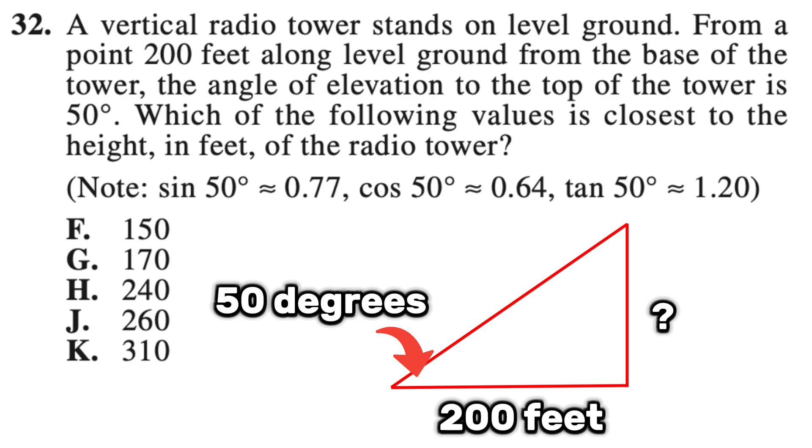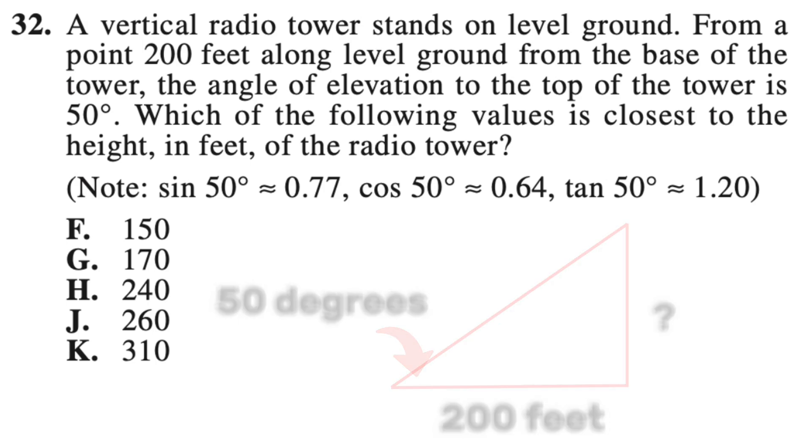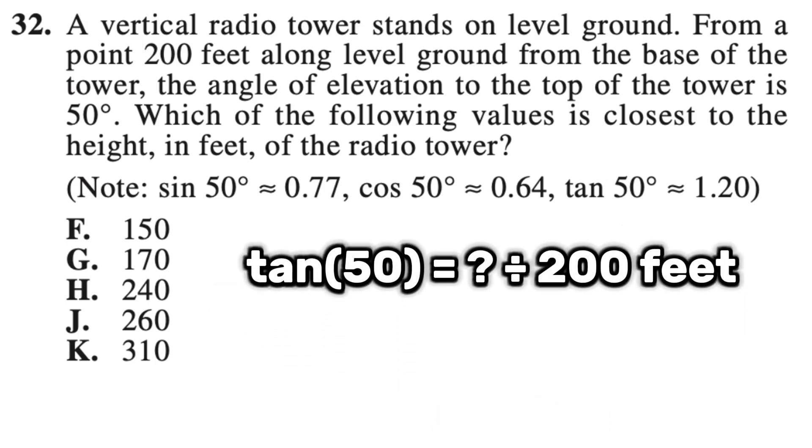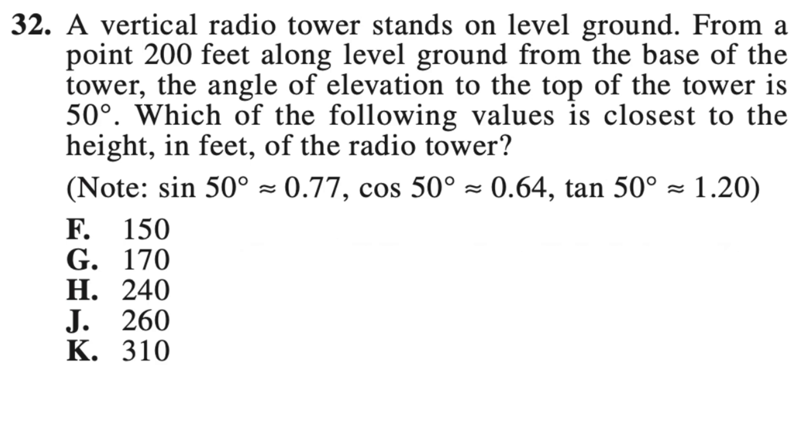We also are told that the angle is 50 degrees. So then we can use SOHCAHTOA to see that tangent 50 is equal to the opposite side over 200 feet. And now we can solve for the opposite side by multiplying tangent 50 by 200. And if you put that in your calculator, that would be 240 or H. And it also tells you in the problem that tangent 50 is 1.2, so you can do 1.2 times 200 and that would be 240.